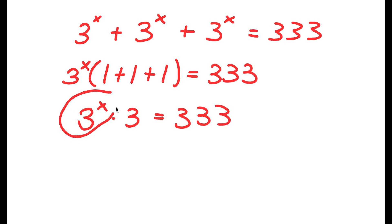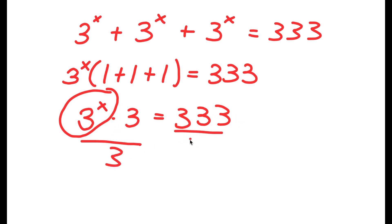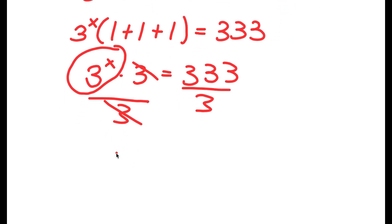We want to isolate 3 to the power of x, so we get rid of the times 3 by dividing both sides by 3. So now I get 3 to the power of x is equal to 111.